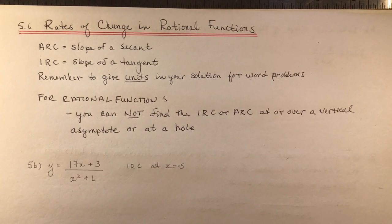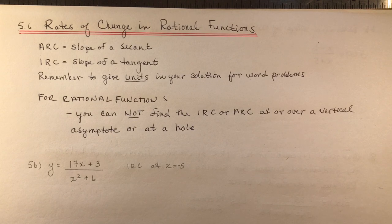5.6 Rates of Change in Rational Functions. So this is the last section in Chapter 5 before we hit the dreaded trigonometry. So hang on to your hats, this is an easy one for you.